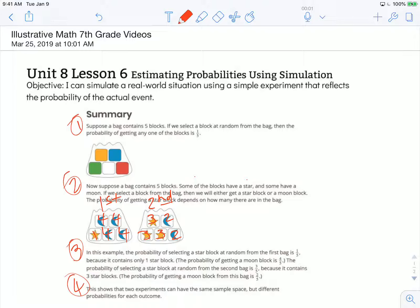Paragraph three. In this example, the probability of selecting a star block at random from the first bag is one out of five because there's just one star block. So the probability would be one fifth. I always like to put boxes around the word because so it stands out. I can find that rationale later.